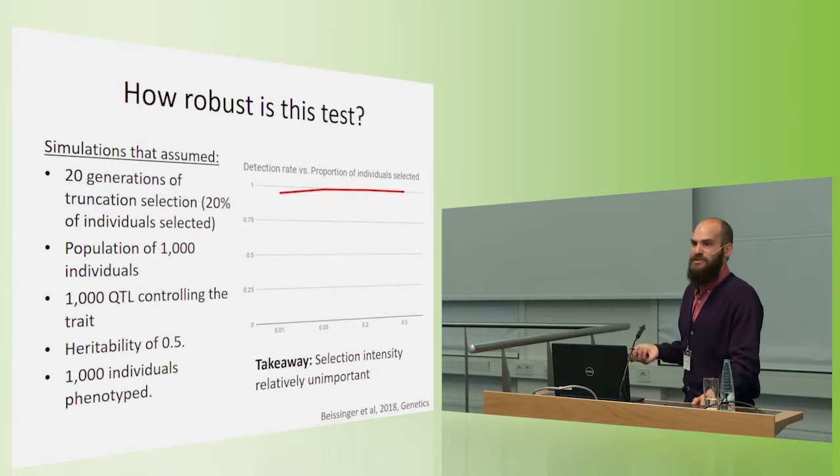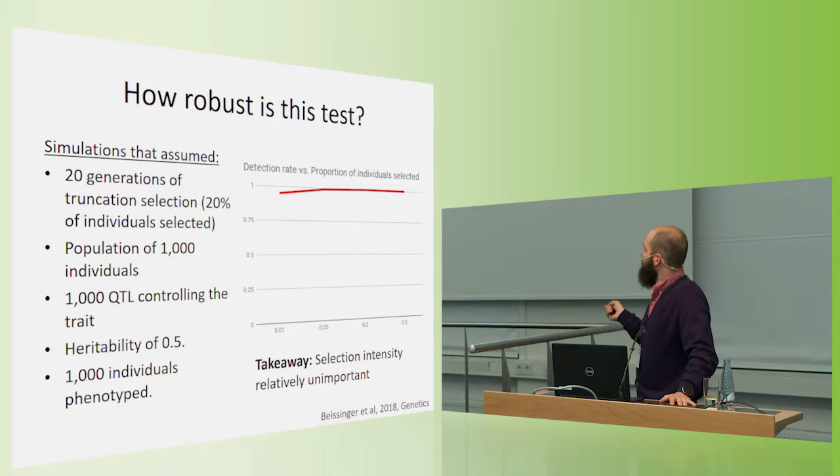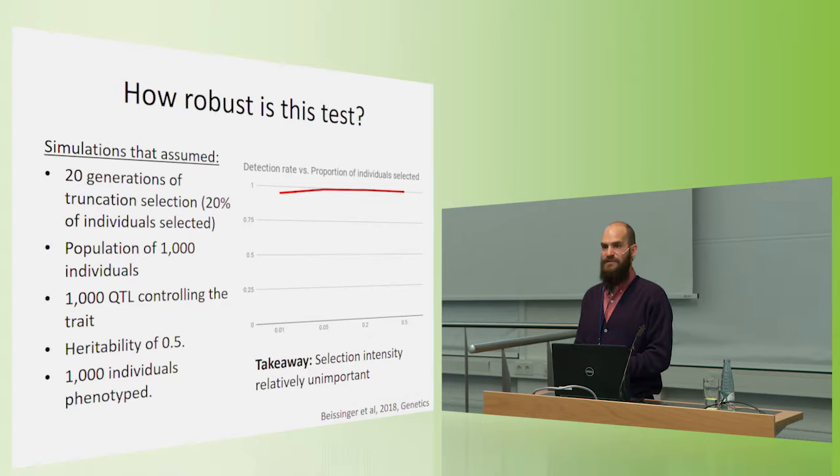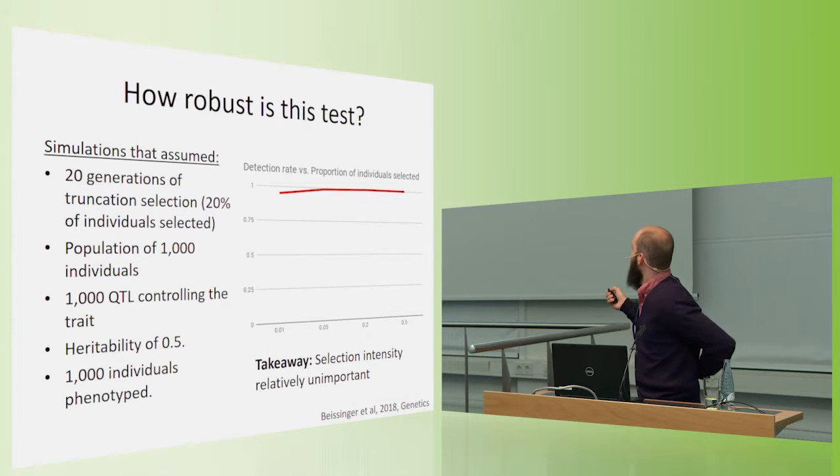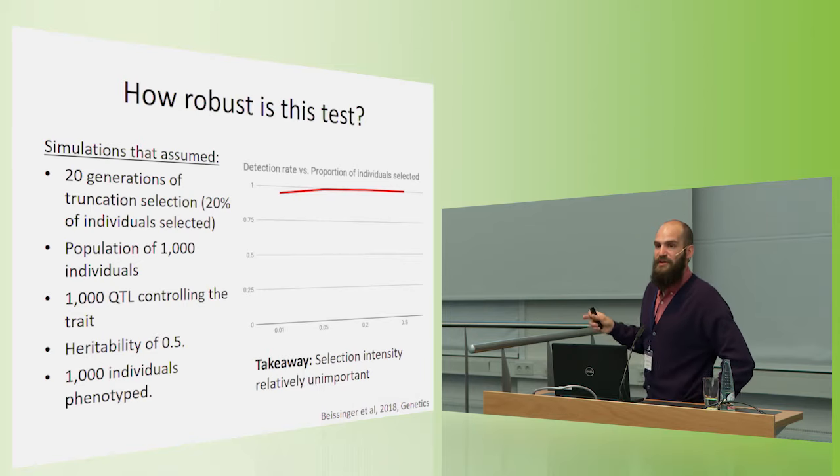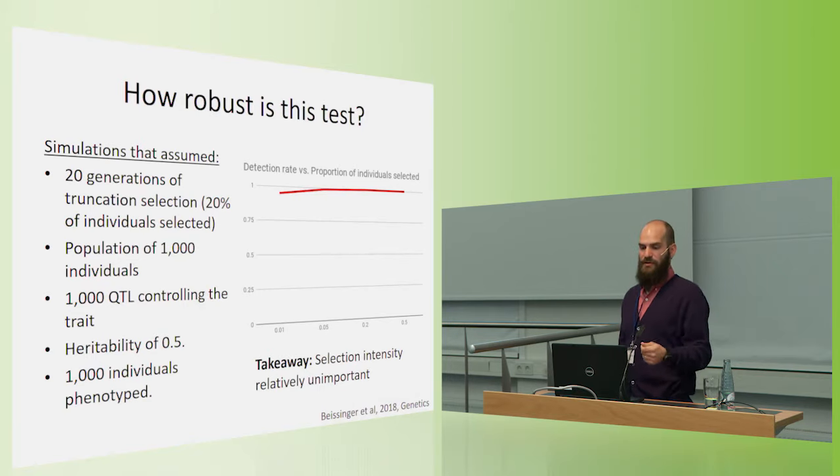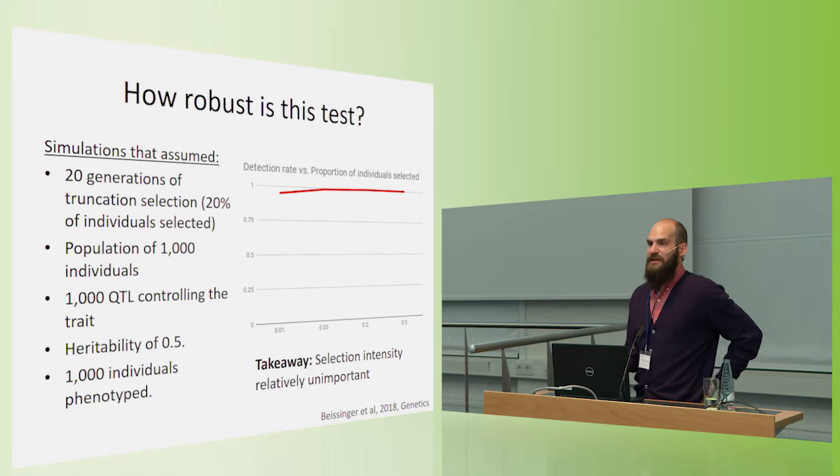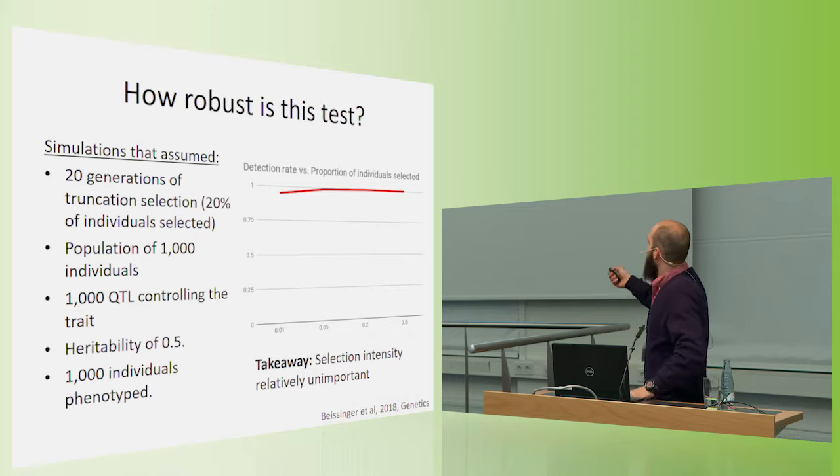The next really neat thing we saw was that if we change the selection intensity, which we did by altering the proportion of individuals that were selected every generation, there's almost no effect of this on the power of our test. So because our power comes from pooling information across many loci, instead of having one locus with a very strong signal, it's better to have, or it doesn't matter whether we have strong selection or weak selection. In any case, we have reasonable power.